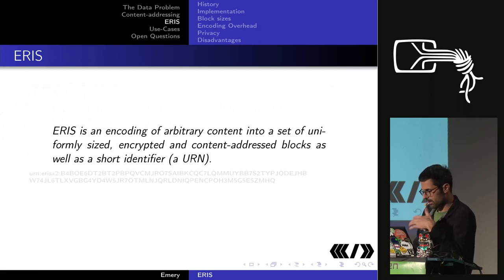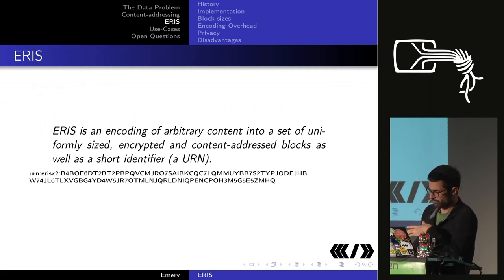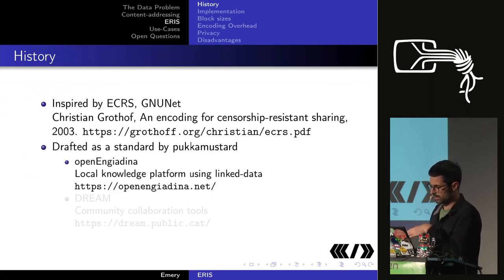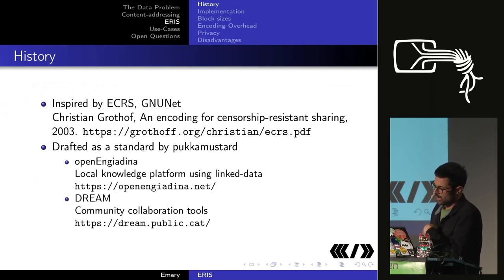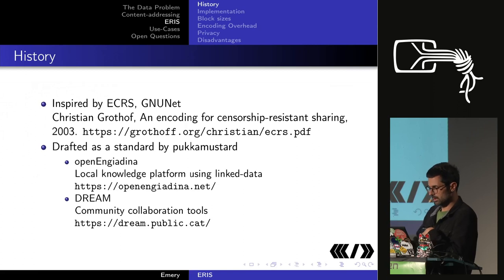Then there's Eris. The simplest explanation of Eris is an encoding of arbitrary content into a set of uniformly sized, encrypted, and content-addressed blocks, plus a short identifier in URN format. Eris came out of GNUnet — Christian Grotthoff wrote a paper on eCRS describing what would become Eris. Puka Mustard wrote the Eris standard for Open Ingiadina, a local knowledge platform for the Swiss Alps. I started working on Eris because of the Dream project, building collaboration tools using CRDTs transmitted through Eris.